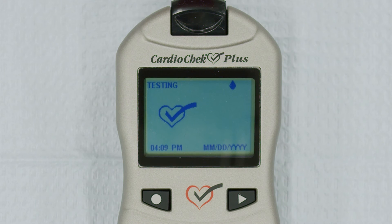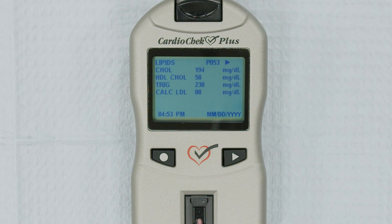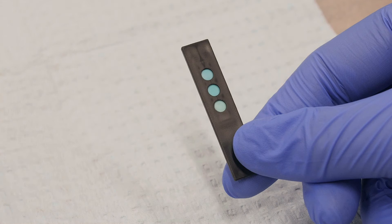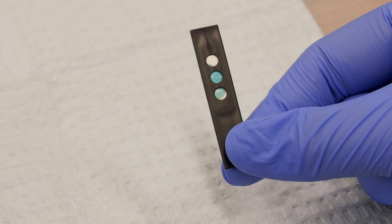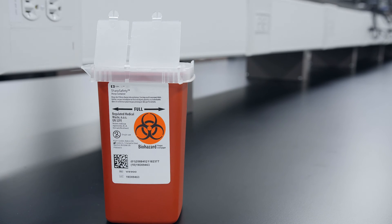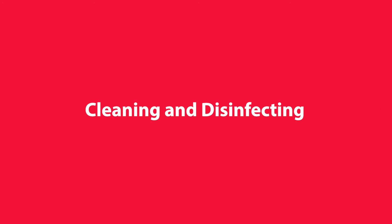Once you've applied the sample, do not move the analyzer until the test is complete. Results will appear on your screen in as little as 90 seconds. Once the results are displayed, remove the test strip. Record the results and dispose of the test strip in a biohazard container. To help protect your patients and yourself against bloodborne pathogens, you must fully clean and disinfect your CardioCheck Plus analyzer between each patient test and before storing.